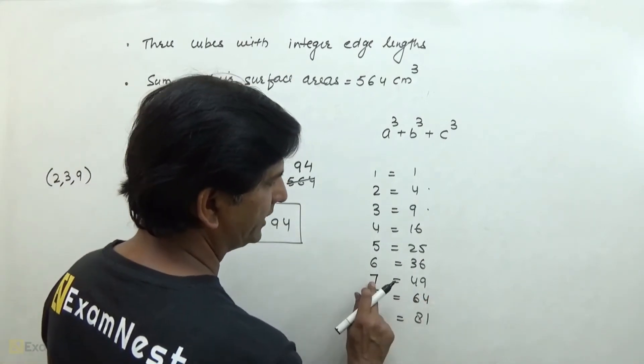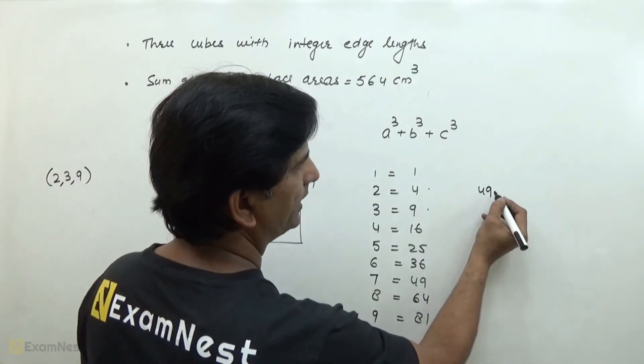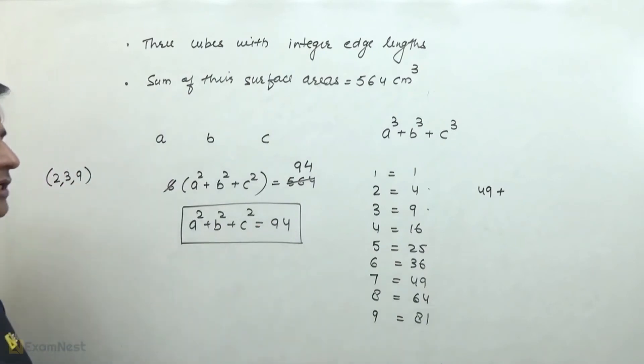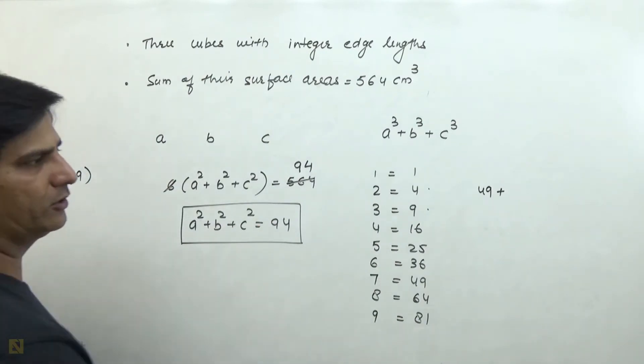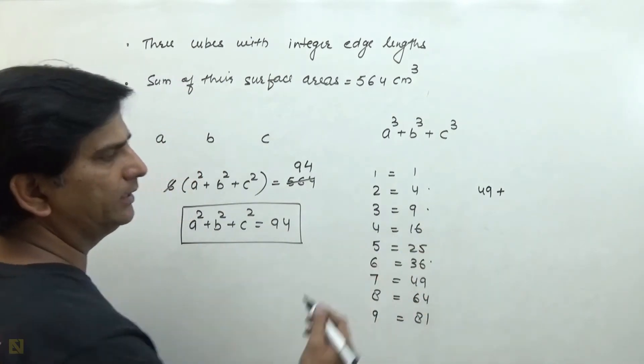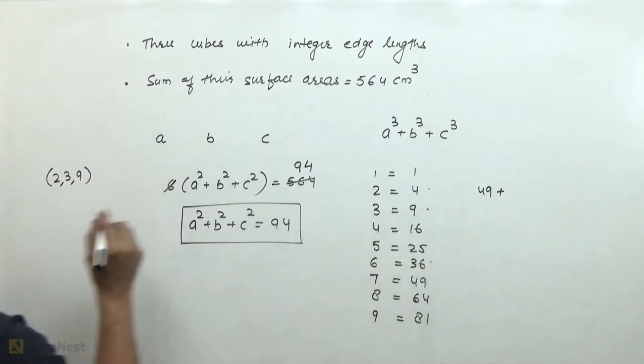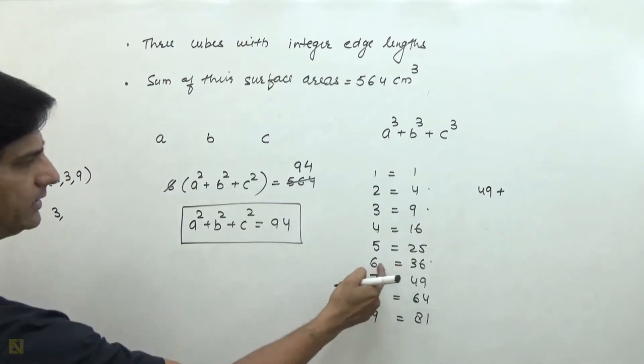So if we take the edge of 7, then we need 49. We need 94 total, so we need 45. This is possible. This is possible if we add 9 and 36. 9 is 3 squared, 36 is 6 squared, and 49 is 7 squared.